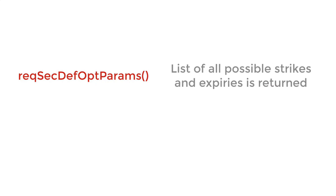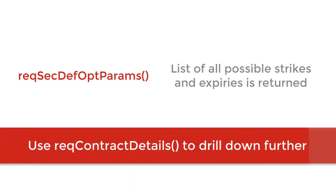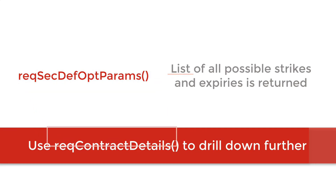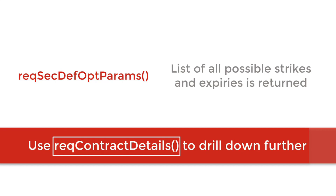That leads us to a discussion of the function REQSecDefOptParams. When this function is invoked, a list of all possible strikes and a list of all possible expiries is returned. REQContractDetails can then be used to query particular individual combinations of strike and expiry. So REQSecDefOptParams is a bit different in that rather than giving detailed information about each individual option, it just provides a list of strikes and a list of expiries.